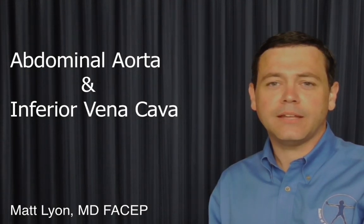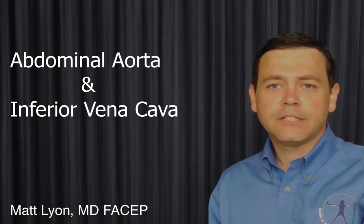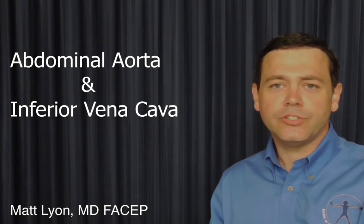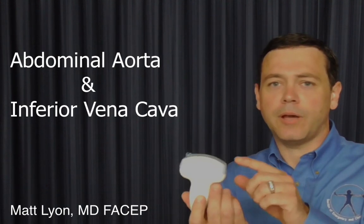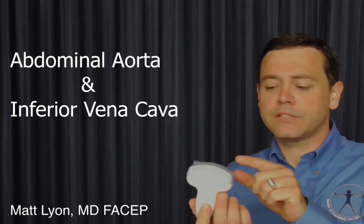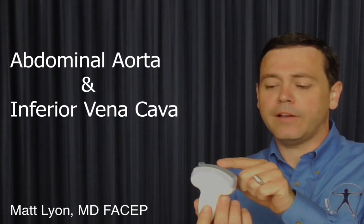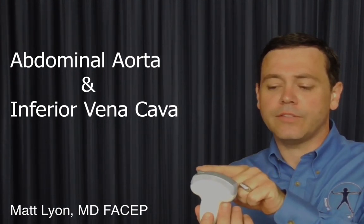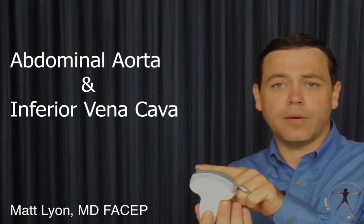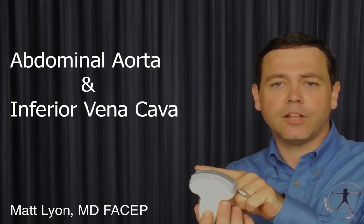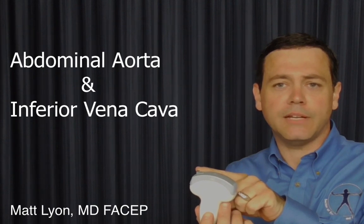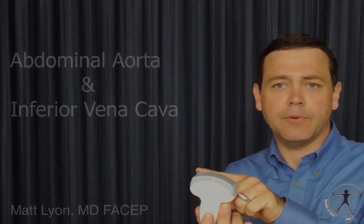Hello, I'm going to show you how to obtain images of the abdominal aorta. To do this exam, we should use a curvilinear abdominal probe. This curvilinear abdominal probe has a curved face on it, which is how you know it's the abdominal probe. It's a low-frequency probe and can image anything in the abdomen.